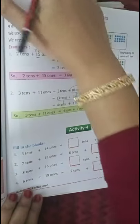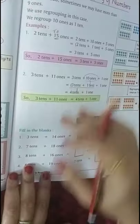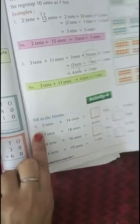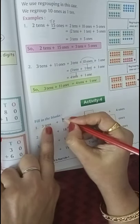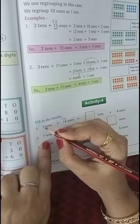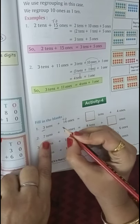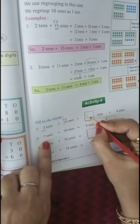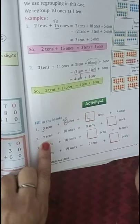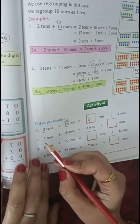Now fill in the blanks. Can you see this? 3 tens plus 14 ones. Simple. 14 ones, how many ones are left? This 1 ten will go here. 3 plus 1 ten is 4 tens. 4 ones are left.